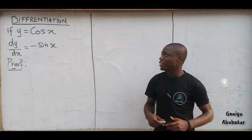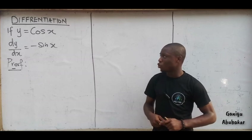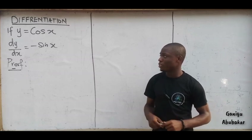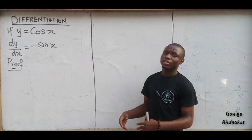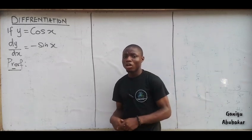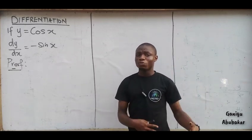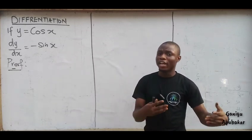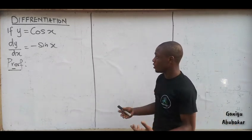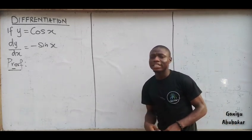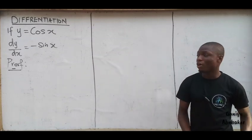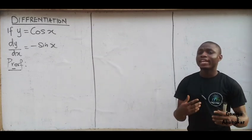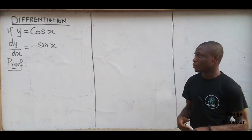We've established that y is equal to cos x. So if y is equal to cos x, of course dy/dx would be negative sin x. So let's prove it — why is it that the derivative of cos x gives negative sin x?